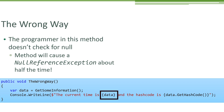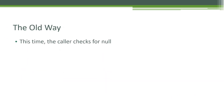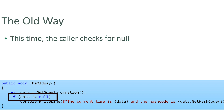However, data.GetHashCode() is going to throw a null reference exception. The right way — the old way to do it correctly — is that the programmer needs to check for null. In this example, we're assigning the data variable with the result of calling GetSomeInformation and checking for null before we display the current time and the hash code.